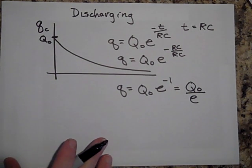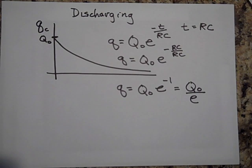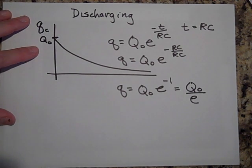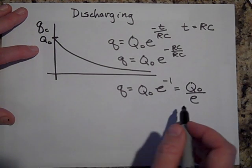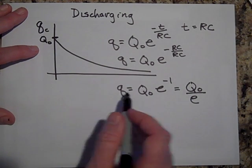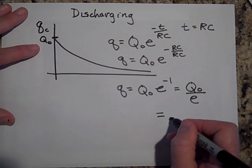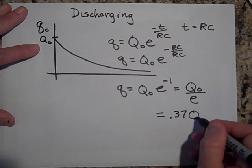Now, E is an irrational number, but it's very close to three. It's 2.7 and it never ends, but it's close to three. So what you can think of this as is that when Q, if you do one over E, I think it's close to 0.37. So it's not quite a third, but it's 0.37 Q naught.